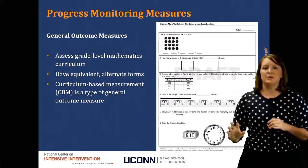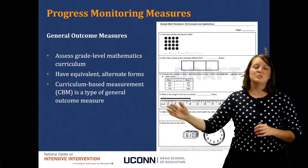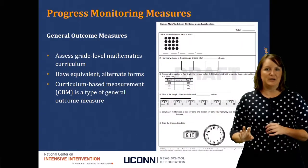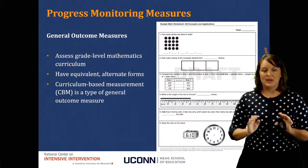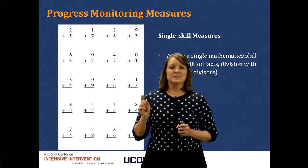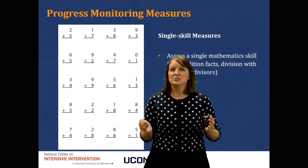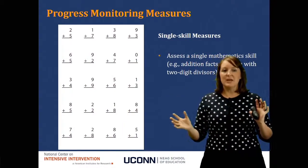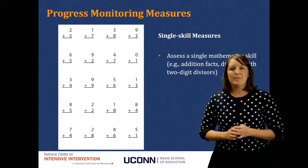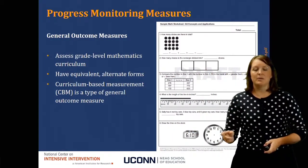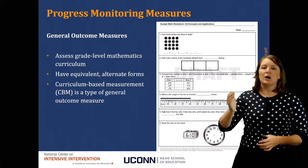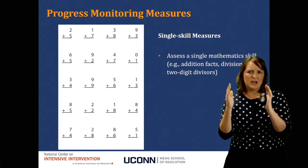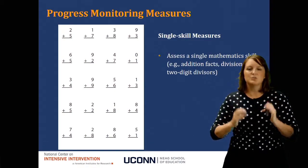This would be a really good measure to use for progress monitoring so that I can see how a student does from one week to the next across the school year on all the things a student would be expected to know by the end of that year. Now here's a single skill measure — it's only measuring students' single digit addition knowledge. It doesn't have a mix of problems. When thinking about progress monitoring, it's better to use a general outcome measure so we understand how a student performs across the school year, rather than a single skill measure, which typically only covers a small time period.